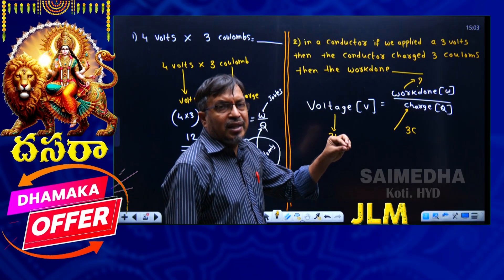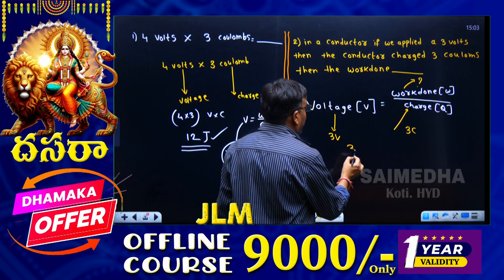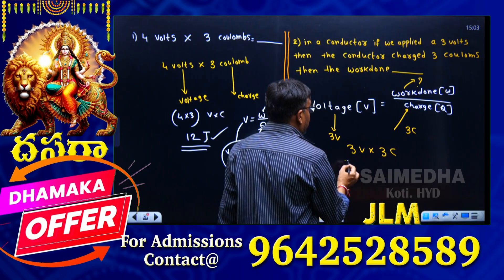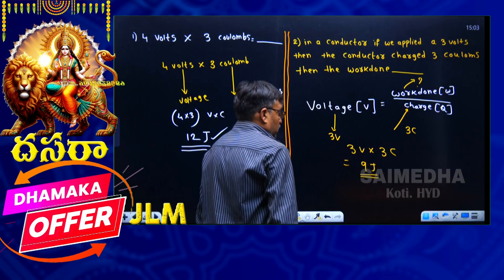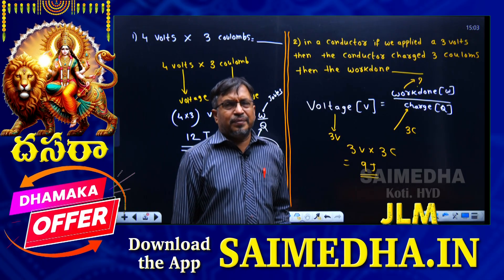Simply, 3 volts into 3 coulombs, that equals to 9 joules. This is the answer, 9 joules is the answer.